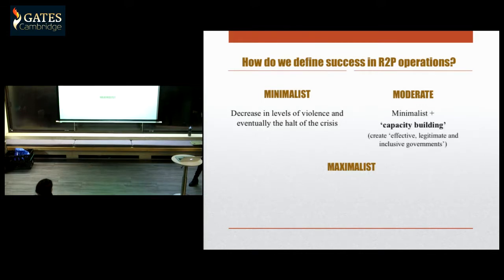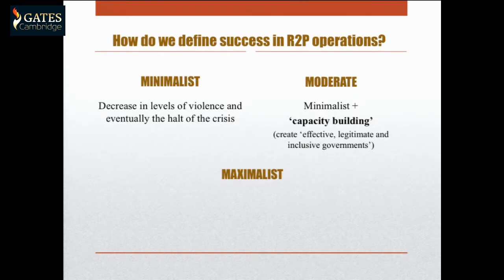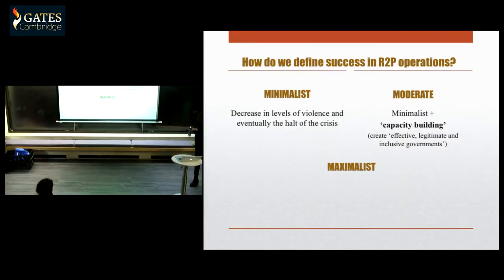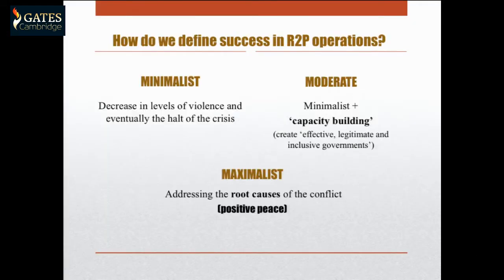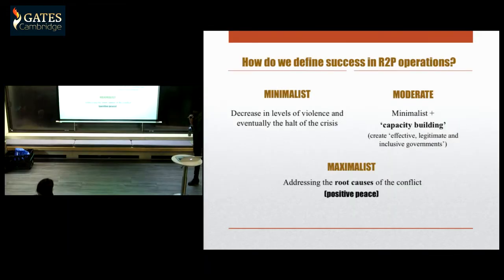A moderate interpretation of success would also mean capacity building. This is contingent upon a specific view of what protection and peace means — viewed as order, but through liberal institutional governance. So it's about building good governance. In maximalist terms, you'd also address the root causes of the conflict, touching upon Galtung's conception of positive peace — not just the absence of direct violence, but also of indirect violence such as structures that perpetuate economic inequality or diminish social and cultural rights.